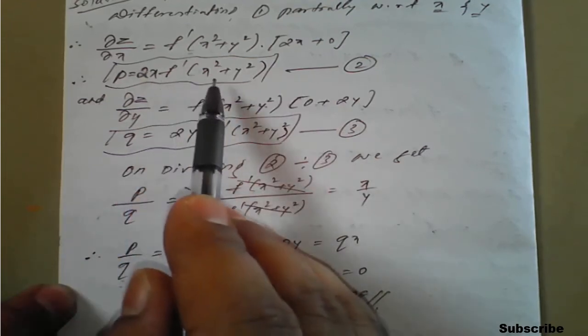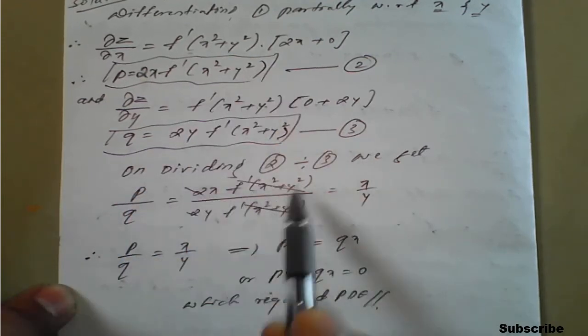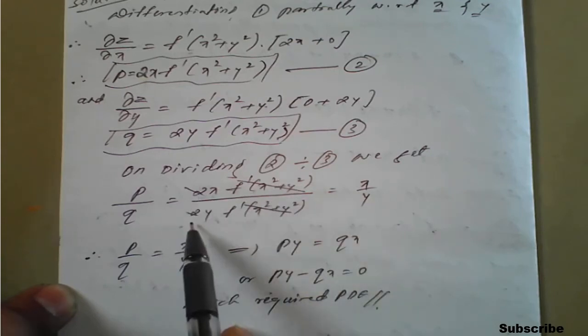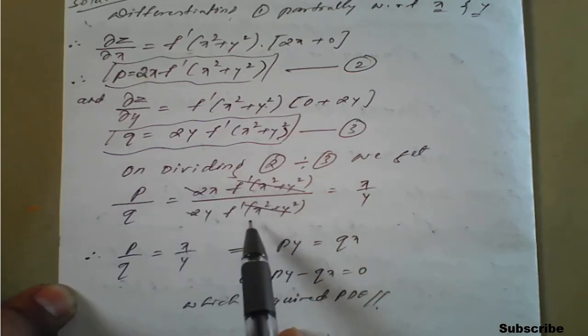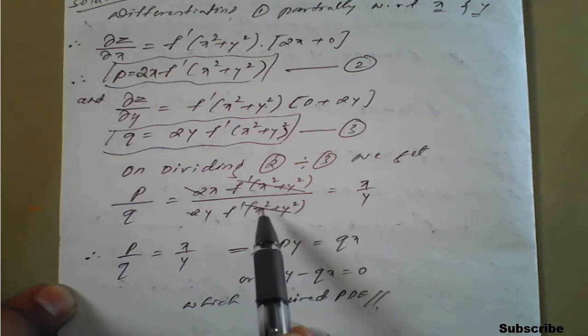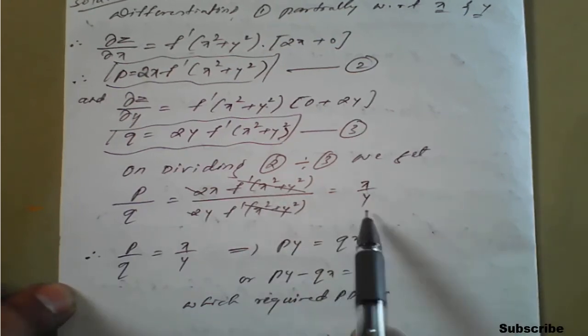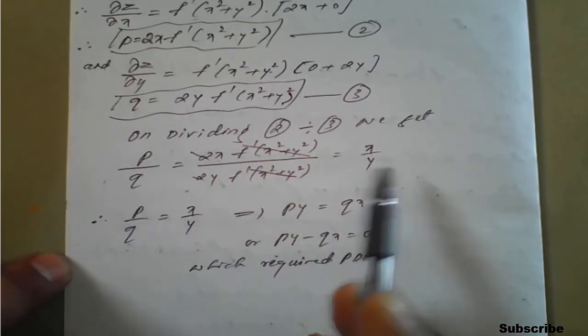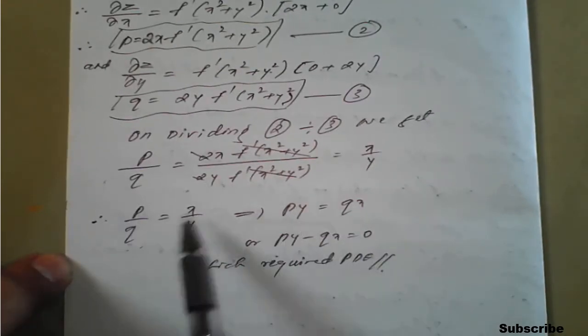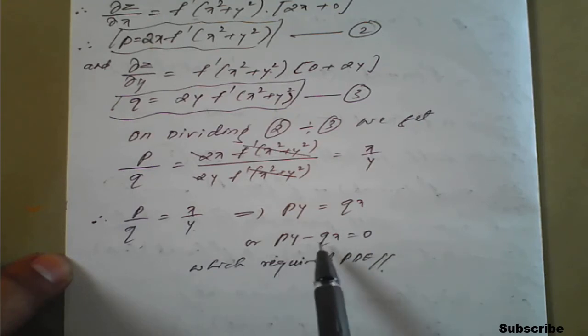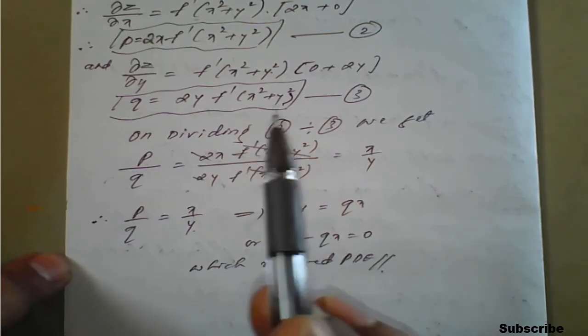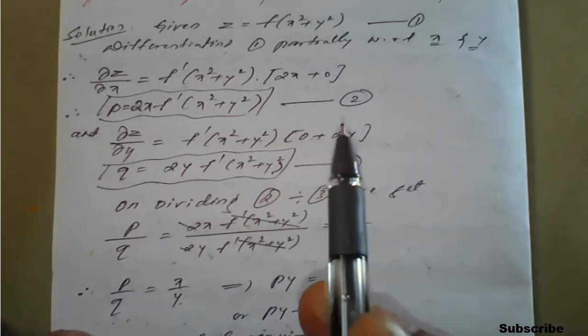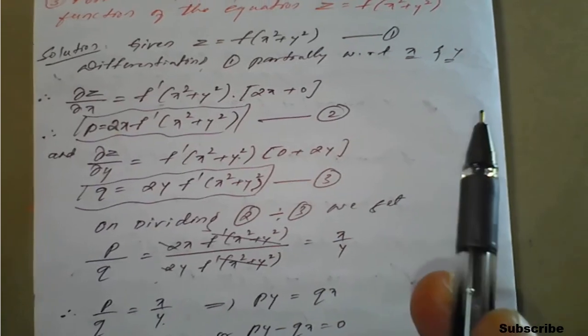What happens: 2x f dash of x square plus y square on the right hand side and divide. Cancel 2, f dash f dash cancel. We have eliminated the function f here. We left with x by y from this, which is nothing but p upon q equals x upon y. Cross multiply: py equals qx or py minus qx equals 0, is nothing but the required partial differential equation of the given equation z equals f of x square plus y square.